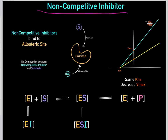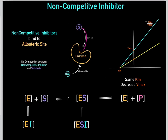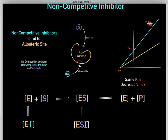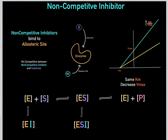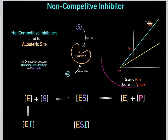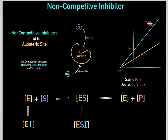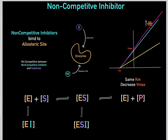The key point is that non-competitive inhibitors bind to an allosteric site, so they are not competing with the substrate for the active site. Substrate binds to the active site; non-competitive inhibitor binds to the allosteric site — they're not competing. On the Lineweaver-Burk plot, adding a non-competitive inhibitor causes the KM to stay the same but the Vmax to decrease, and the slope (KM over Vmax) increases.